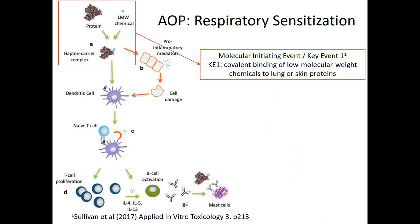In terms of the local lymph node assay and the regulatory environment, skin and respiratory sensitization are linked, but the local lymph node assay gives an awful lot of false positives because not all skin sensitizers are respiratory sensitizers. So we start to think about our AOP — published by Christie, myself, and coworkers — which focuses on the molecular initiating event: covalent binding of low molecular weight chemicals to proteins in the lung and the skin. It's important to consider the skin as a route of induction. We're thinking about low molecular weight as less than a thousand grams per mole, with covalent bond formation analogous to what we've seen with skin sensitization.